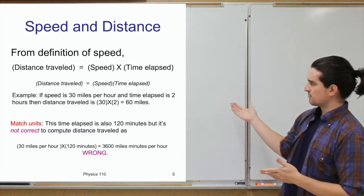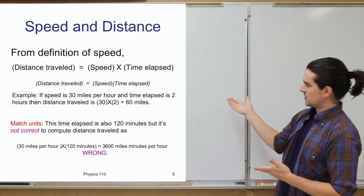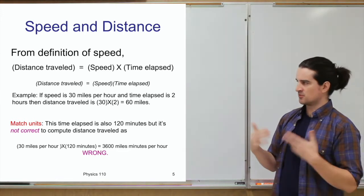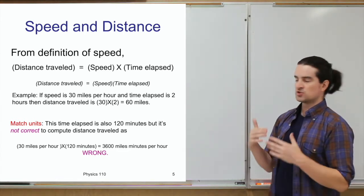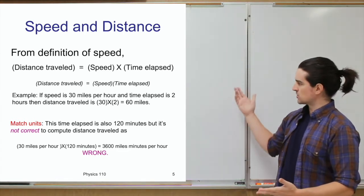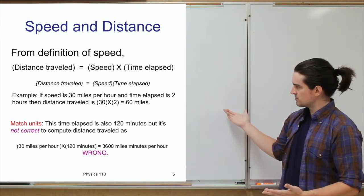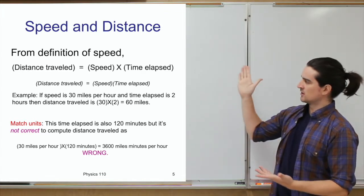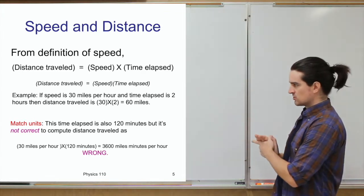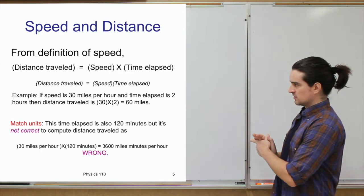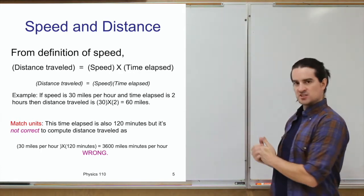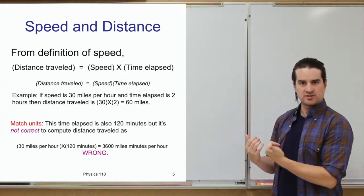As an example, if a car's speed is 30 miles per hour and it travels for two hours, then 30 miles per hour multiplied by two hours equals 60 miles traveled.